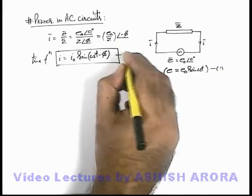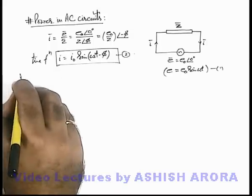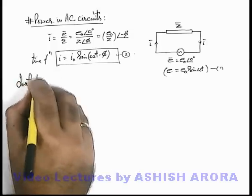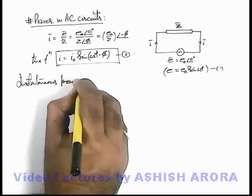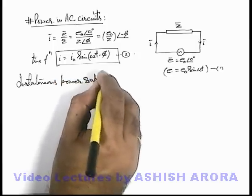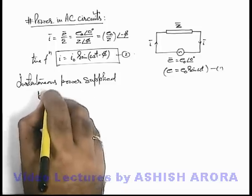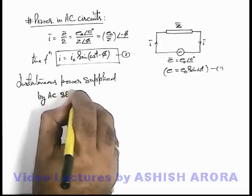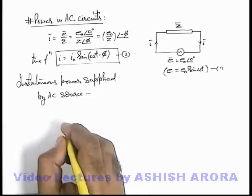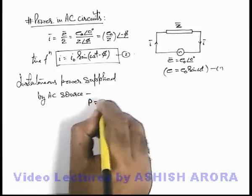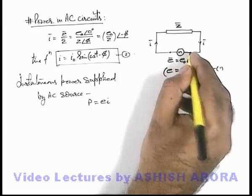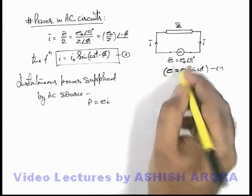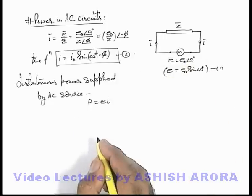We can write, if we calculate the instantaneous power supplied by AC source, and this instantaneous power we can simply write as e times i, because e is at any time potential difference across the source, and i is the instantaneous current supplied by it.